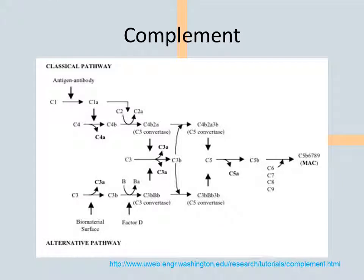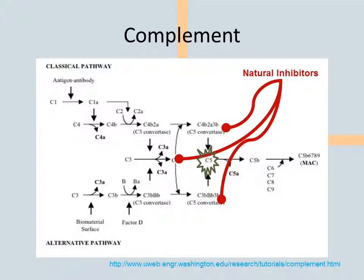The complement system provides nonspecific immune protection. Initial activation may be through an antigen-antibody complex — the classical pathway — or contact with a number of biomaterials — the alternative pathway. Both pathways converge on C5. After that, the system forms a membrane attack complex, or MAC, capable of damaging both foreign threats and host tissues. The complement system is always turned on, and a variety of natural inhibitors keep its activity in check.